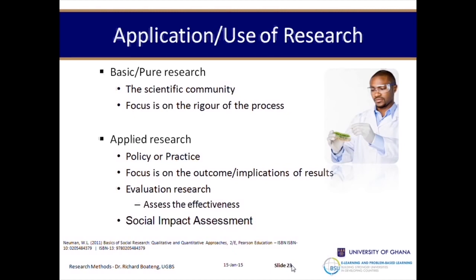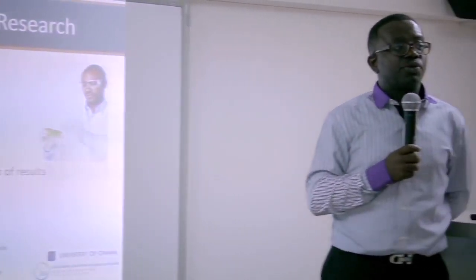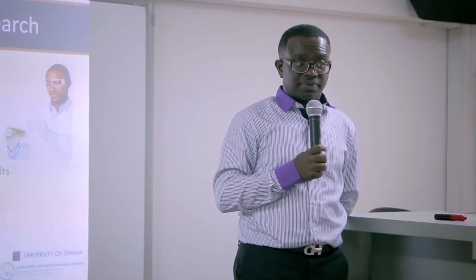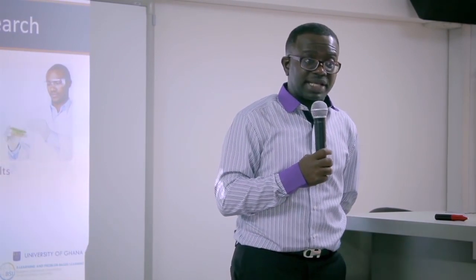The first type is application and use of the research. We have pure research or basic research, and applied research. These two types define how we use the research outcome. For pure research, the focus is on the scientific community and the rigor of the process. When you do research that is going to be published in a scientific journal, we term that pure or basic research — your audience is the scientific community. They are more concerned about systematic procedures and principles: is it reliable? What is the validity? What is the sample size?